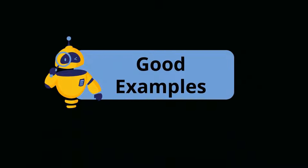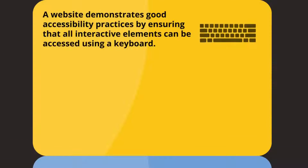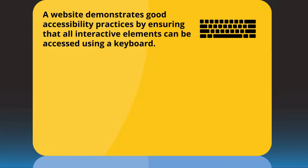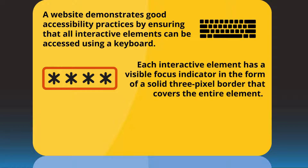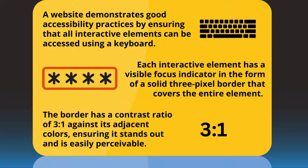Here are some examples that showcase different ways to implement visible focus indicators. A website demonstrates good accessibility practices by ensuring that all interactive elements can be accessed using a keyboard. Additionally, each interactive element has a visible focus indicator in the form of a solid 3-pixel border that covers the entire element.